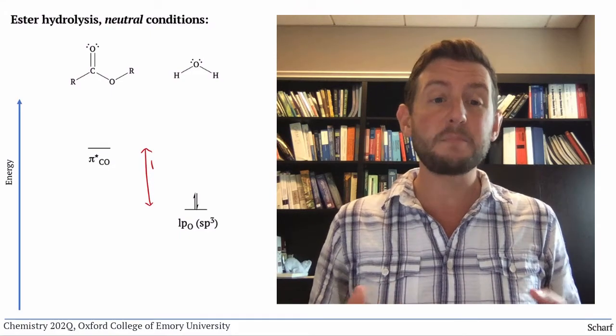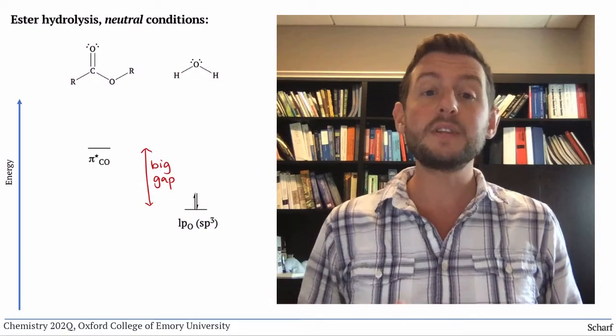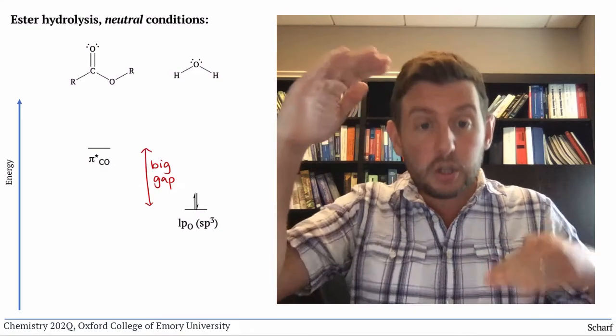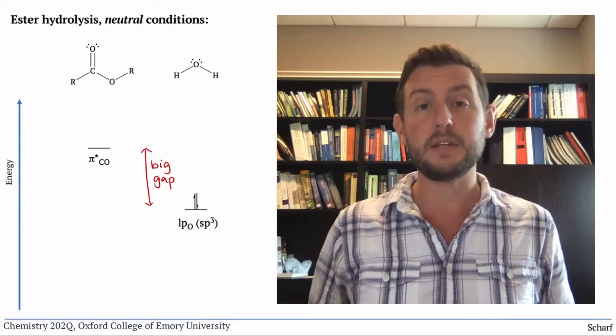The two orbitals are pretty far apart in energy. That's one of the key factors for determining the speed of a reaction. The closer in energy two interacting orbitals are, the easier and faster it is for them to interact.